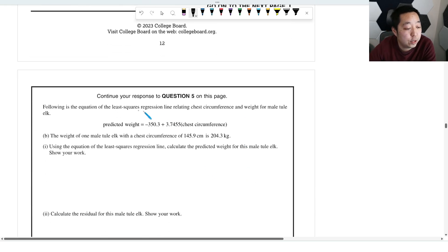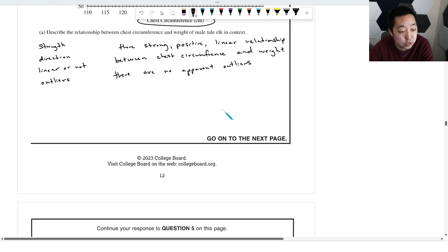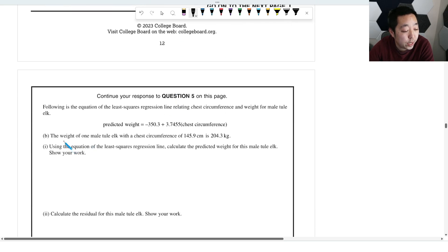All right, let's take a look at this one. The following equation is the equation of least squares regression line relating the chest circumference. So this is the predicted weight. The weight of one male tule elk with a chest circumference, use the equation of least squares regression, calculate the predicted weight of this male, show your work. So the predicted weight, the y hat is going to be negative 350.3 plus 3.7455 times the chest circumference. The chest circumference is right here, 145.9.